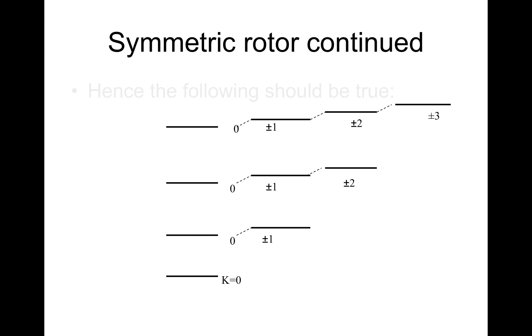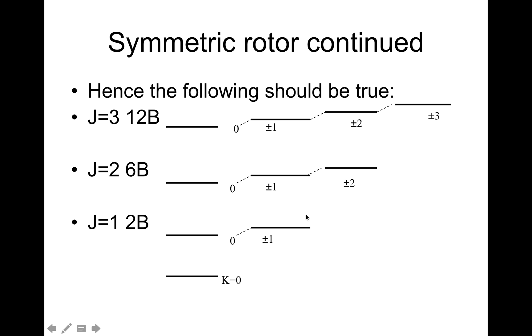Here is a diagram showing exactly what we are talking about here. Hence, the following should be true. J equals 3 has energy 12B: 0, ±1, ±2, ±3. J equals 2 has 6B: 0 and ±1. J equals 1 has 2B: 0 and ±1. And as we go, we finally get to J equals 0, where K is also 0, and we have only one level.